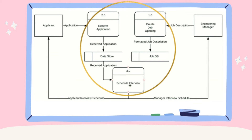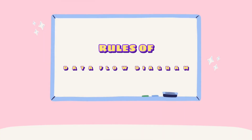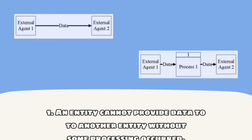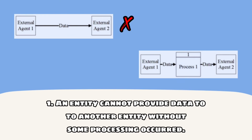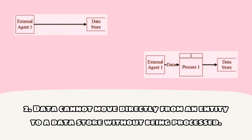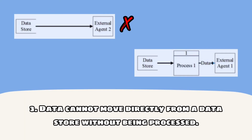Let us now proceed to the rules of data flow diagram. Rule number one: an entity cannot provide data to another entity without some processing object. Rule number two: data cannot move directly from an entity to a data store without being processed. Rule number three: data cannot move directly from a data store without being processed.